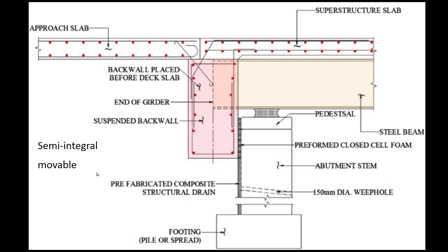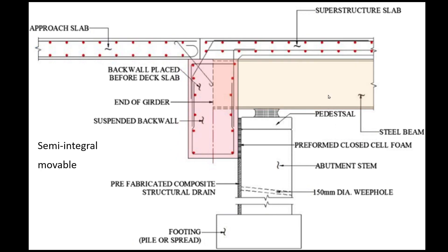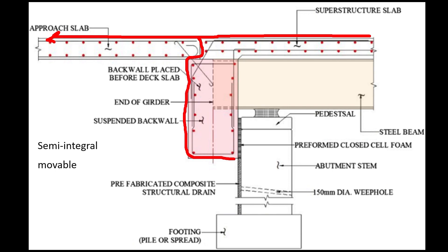There's one more type called a semi-integral movable abutment. The column, footing, and usually battered piles don't move — but the rest of it does: the deck, the approach pavement, the concrete at the back, and the beam all move together. The advantage is that water doesn't drain down onto the bridge abutment — it's carried off the bridge. If some water does come down, it goes around, hits the prefabricated material, and exits through a weephole. This prevents water from affecting the abutment — a problem that stub bridges also face when their joint fails and water drips onto all the supports.